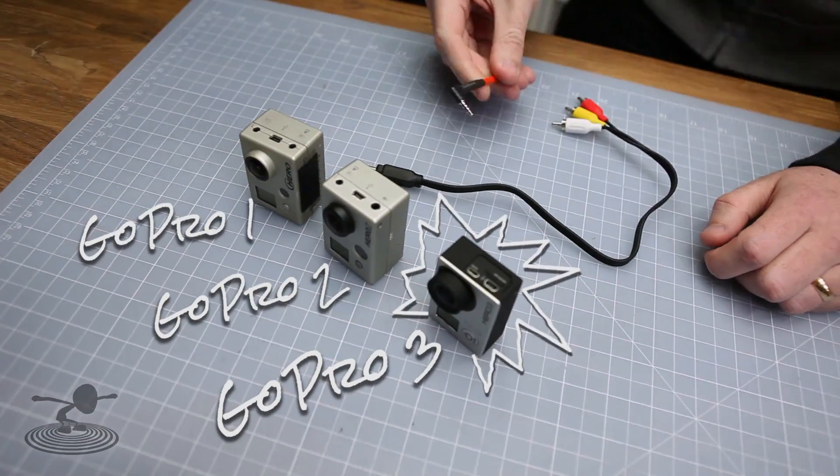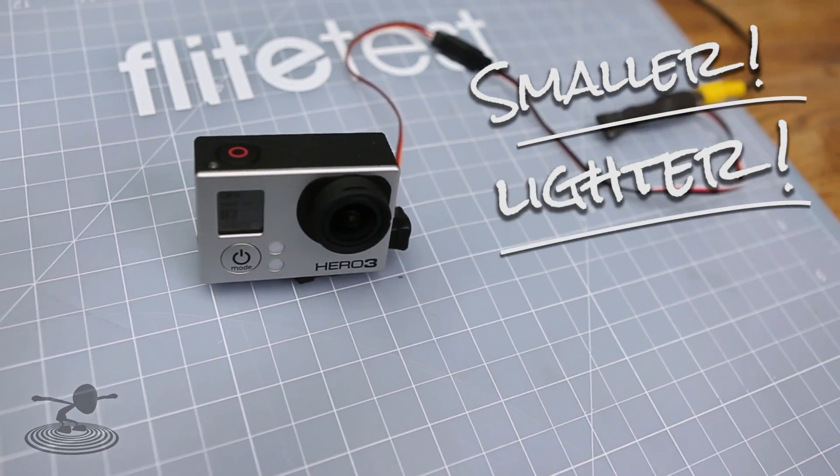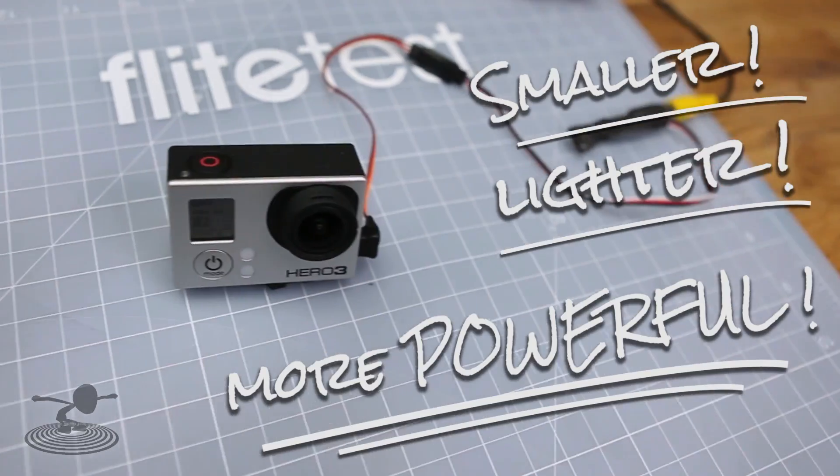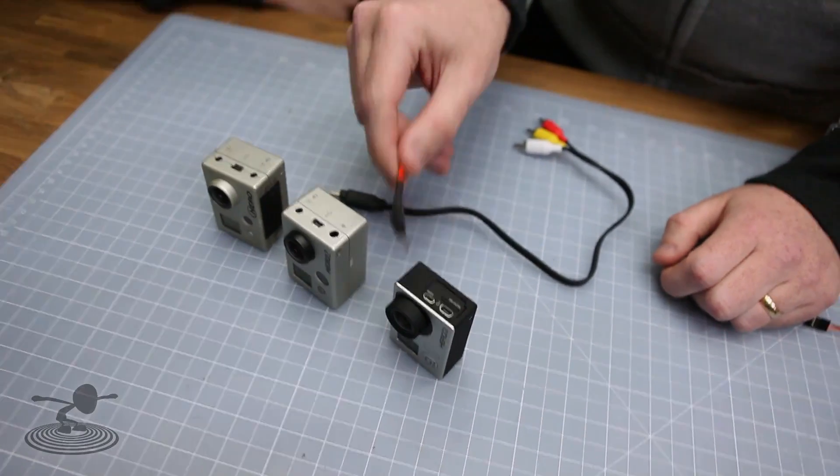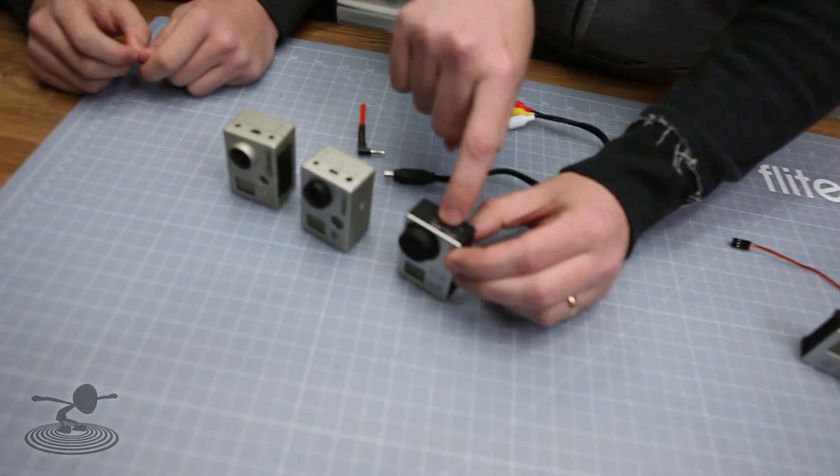Why is this one different from the others? It's the new GoPro 3. It's smaller, lighter, and even more powerful. There's a hole here, a hole here, and they decided not to put a port there. Yeah, because in order to make it small, lighter, they removed this connector and replaced it with a 10-pin USB connector.